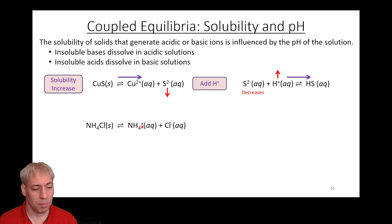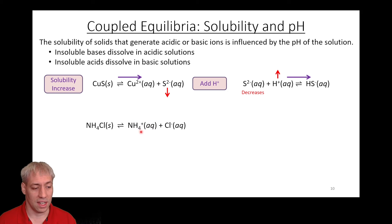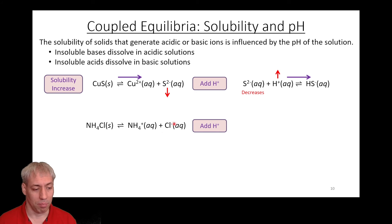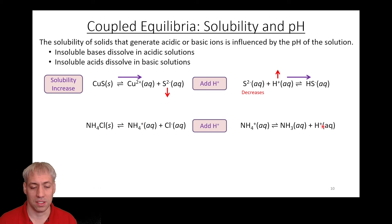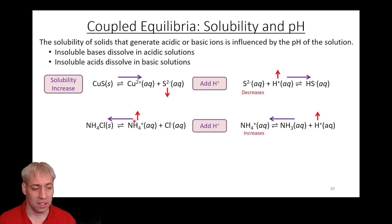Here's another example: NH4Cl makes NH4⁺ plus Cl⁻. Cl⁻ is the conjugate of HCl — not basic at all, same as sodium chloride. But NH4⁺ is an acid. So if I add H⁺ to this, there's no H⁺ directly in the dissolution equation, but H⁺ is involved in the acid equilibrium: NH4⁺ gives NH3 plus H⁺. By adding more H⁺, I shift that equilibrium to the left, increasing the amount of NH4⁺. If NH4⁺ increases, the dissolution equilibrium shifts left — making NH4Cl less soluble.